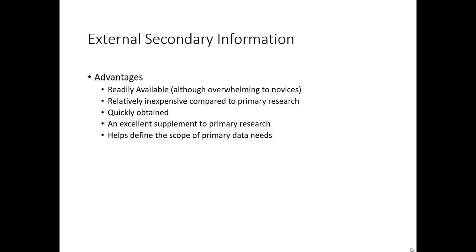To wrap up, there are key advantages to using external secondary information. First, it is readily available — we are in a data-dense world when it comes to marketing. Secondary information is also usually very inexpensive compared to primary research, and it is quickly obtained. You can skip the actual execution of a research project and go right to the results and analysis. In addition, secondary information can be an excellent supplement to your own primary research.